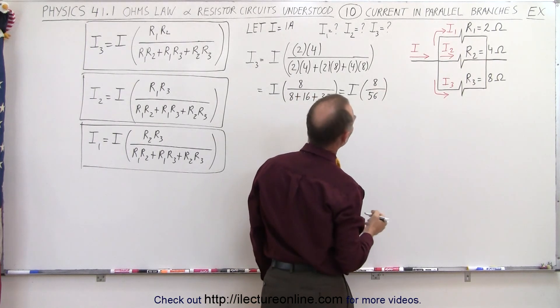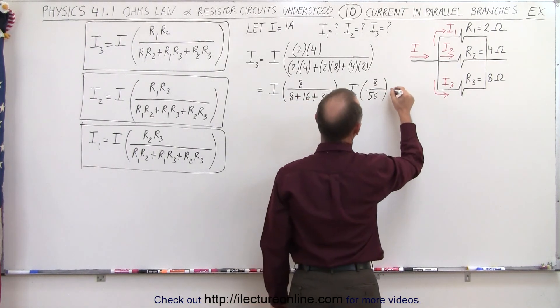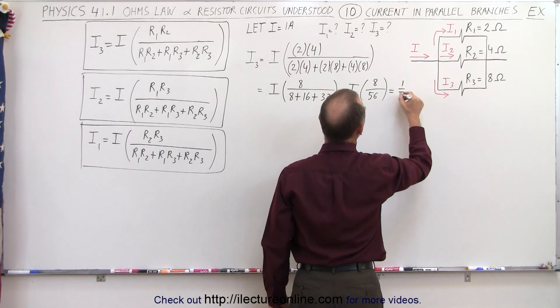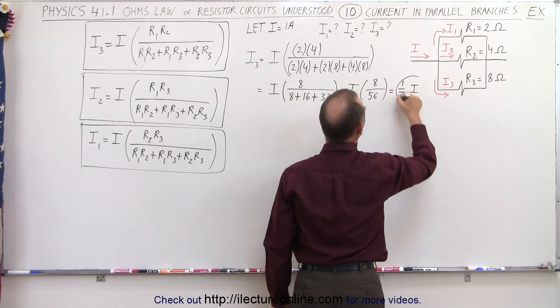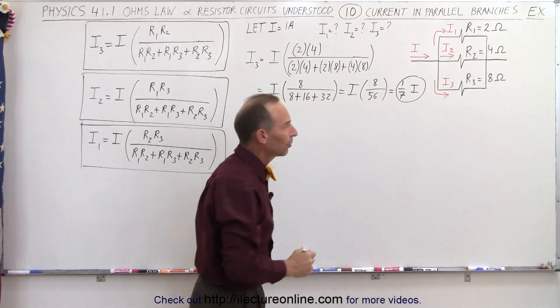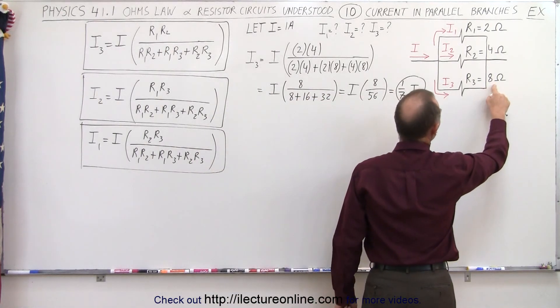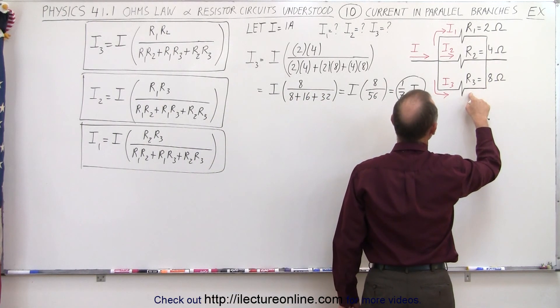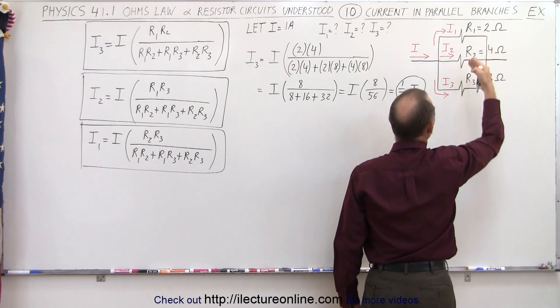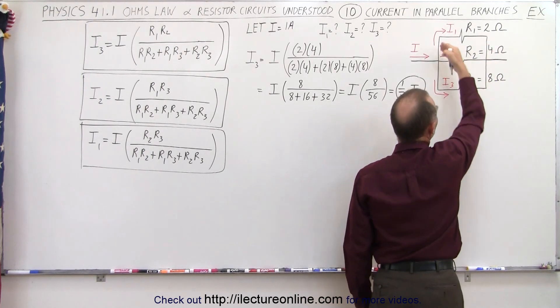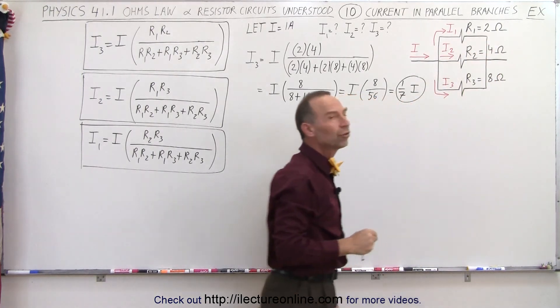And 8 goes into 56 seven times, so that's equal to 1/7th the current coming into the branch point. So that makes sense, because we have the largest resistor in the bottom branch, so we would expect the smallest portion of the current to go to the bottom, and greater portions to go to the top two.